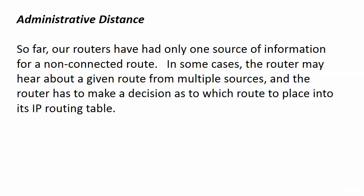So far in our labs, our routers have only had one source of information telling them about a non-connected route. It may have been a static route, it may have been a RIP route, but there was no choice that had to be made. But in some cases, especially in production networks, a router may hear about a given route from multiple sources, and the router has to make a decision as to which route to place into its IP routing table and which protocol is going to be used to handle traffic for that destination.